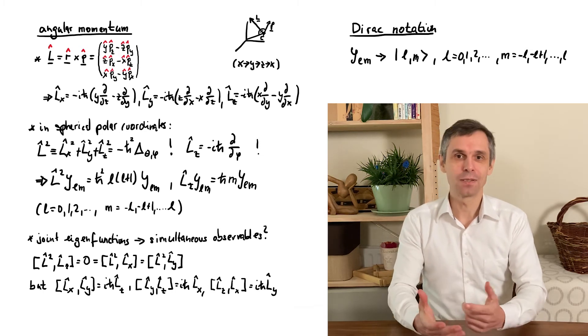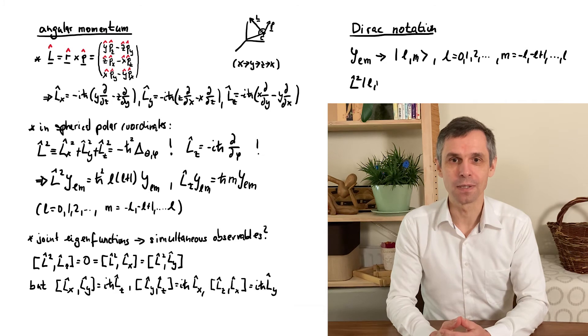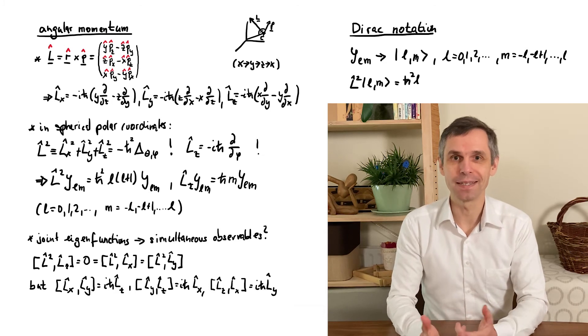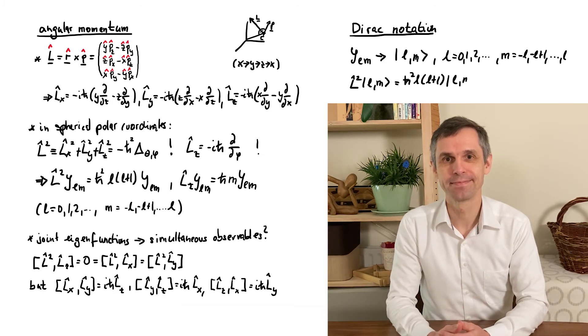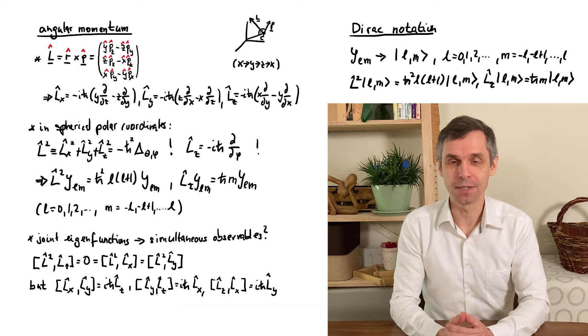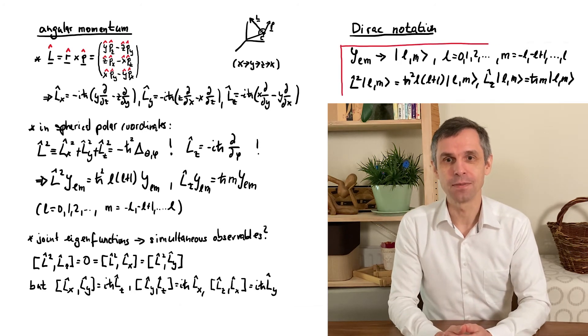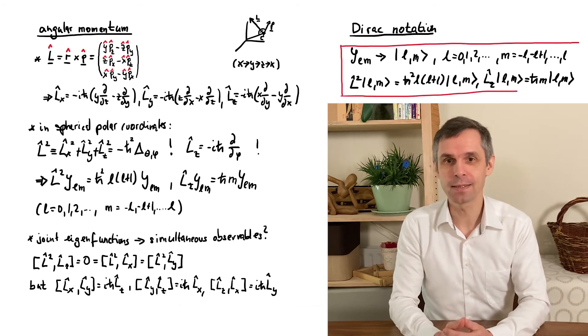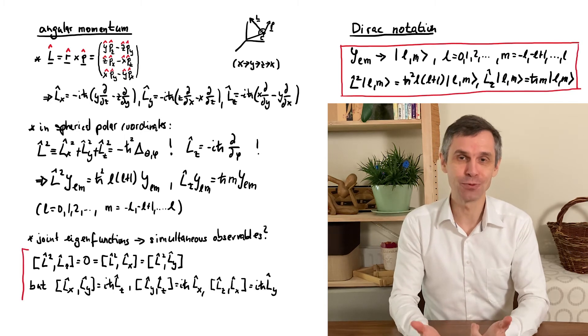And all that we really need to know about these states is the corresponding algebraic expressions of the eigenvalues. We can even do all our calculations in this way. The only other information we need are the commutators, so just everything in the red boxes.